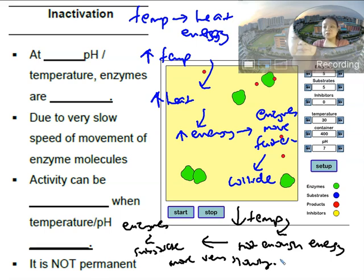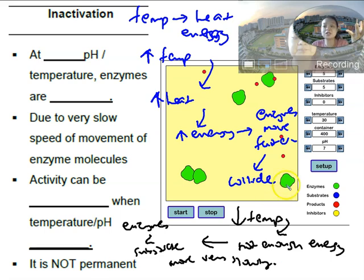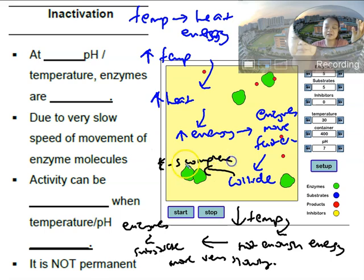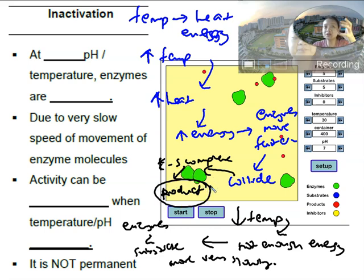Your enzymes and your substrates need a temperature that's high enough to give more energy. With more energy, they can move faster. And once they collide more, they will be able to produce your ES complex. Once your enzyme combines with your substrate, you will be able to produce your product successfully. This is how temperature actually affects enzyme activity.